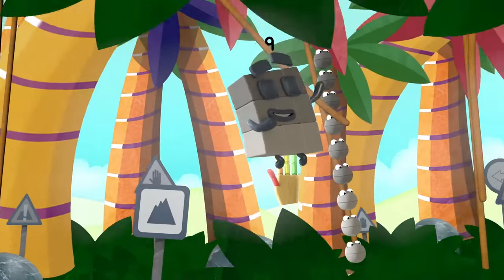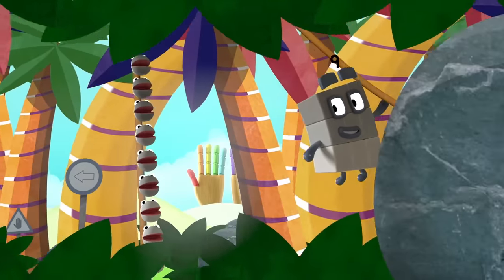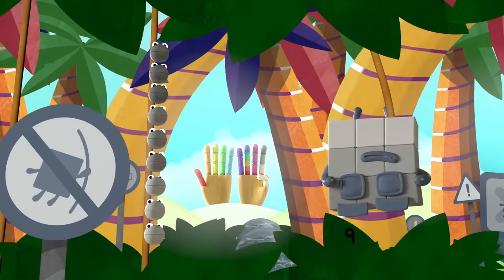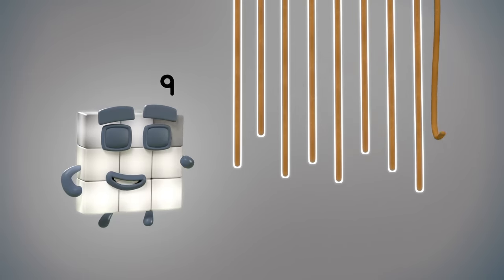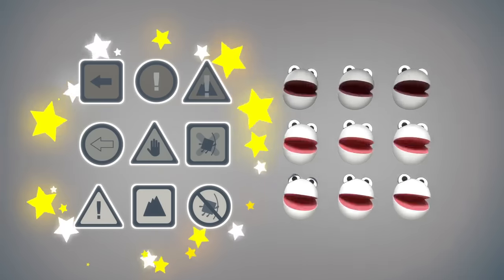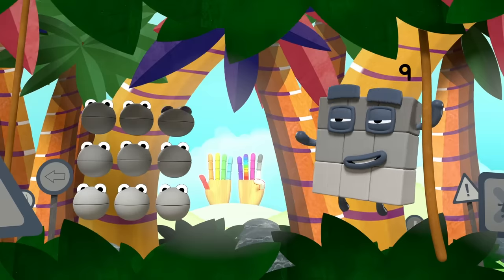Nine numberblocks and me, counting everything we see. Swinging through the vines, ignoring all the signs. Nine numberblocks and me. One, two, three, four, five, six, seven, eight, nine, nine vines. One, two, three, four, five, six, seven, eight, nine, nine signs. Nine numberblocks and me.